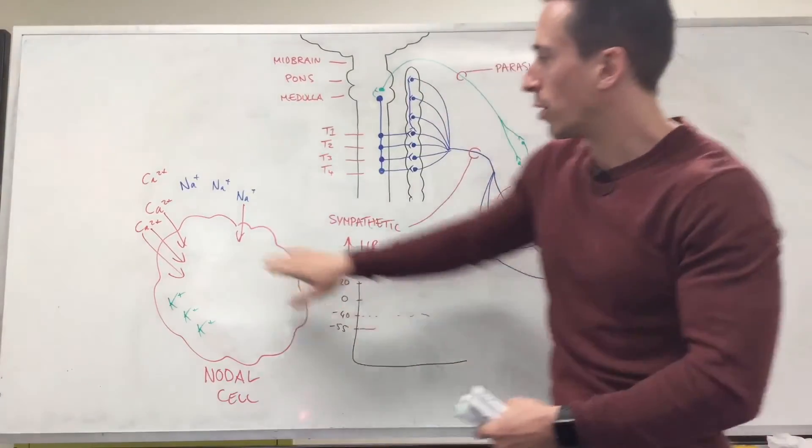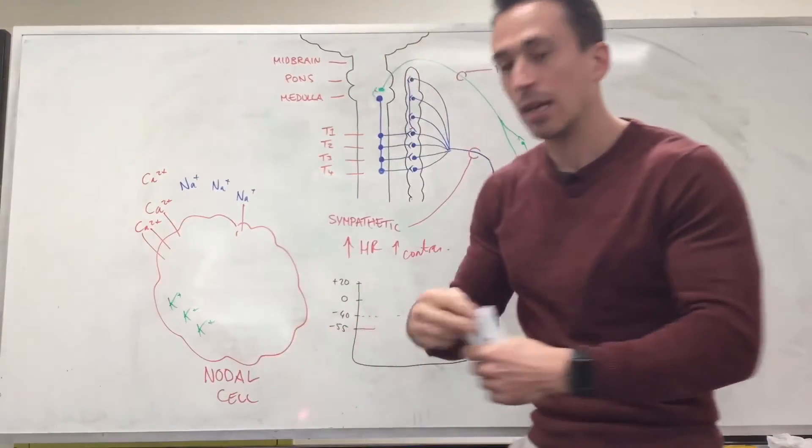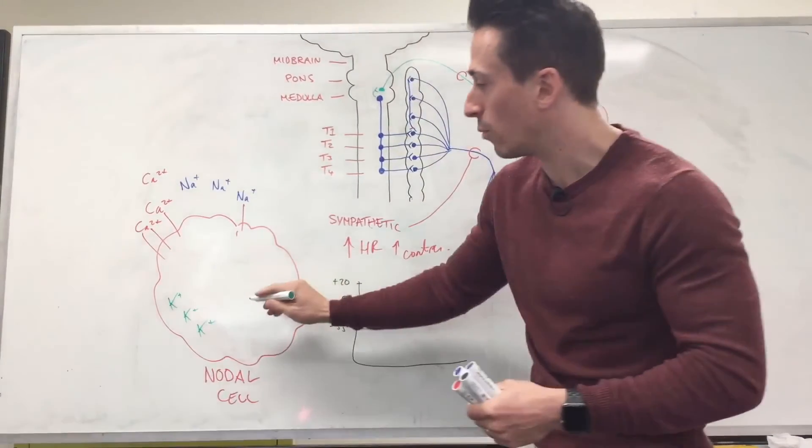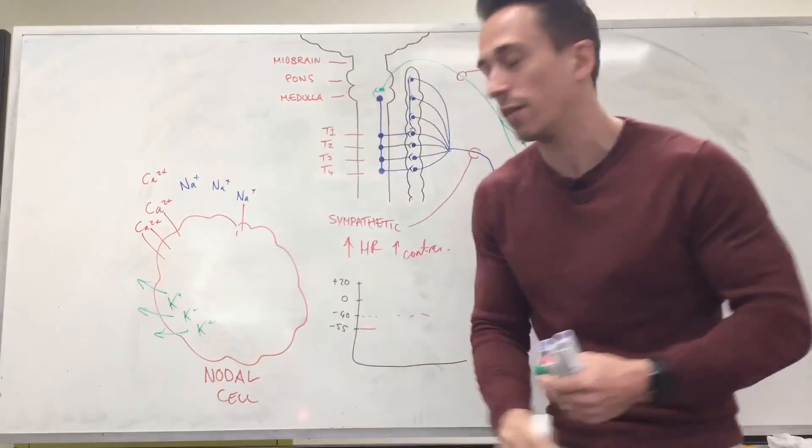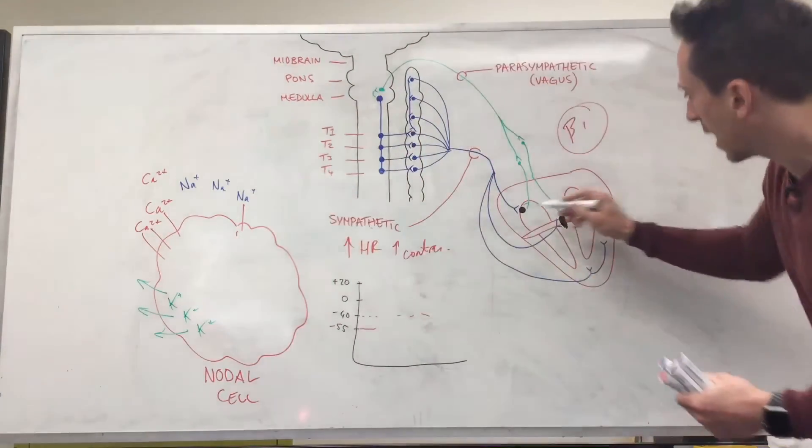And what do we have inside? Potassium. So what the parasympathetic fibers do, more specifically the vagus, when it innervates the SA node and AV node, is it releases acetylcholine.